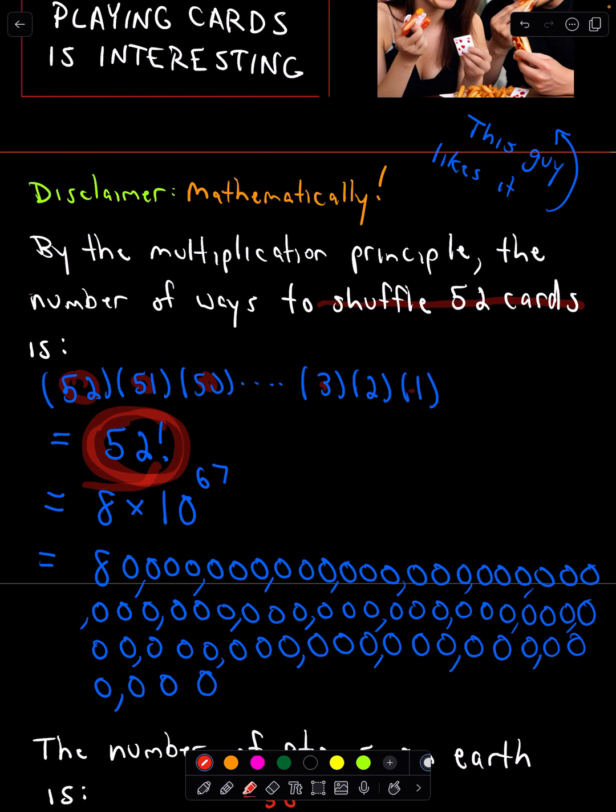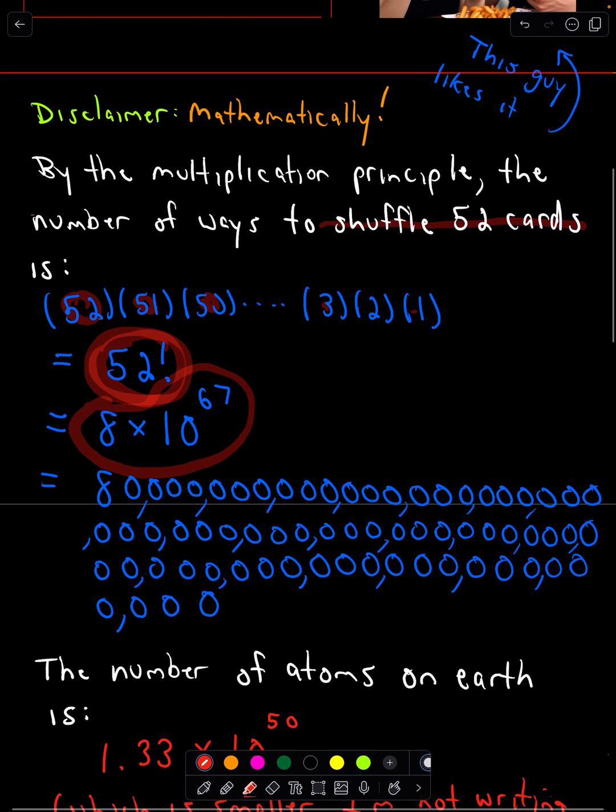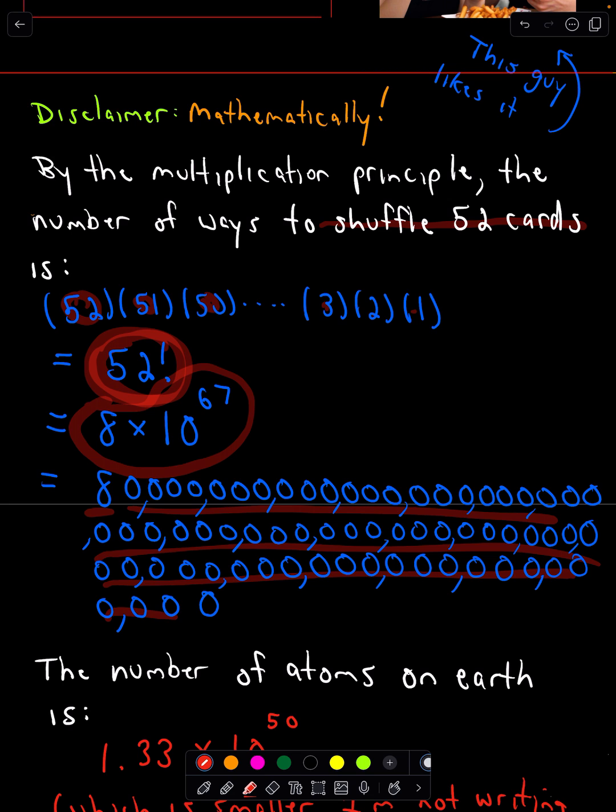But if you expand that out, that's actually 8 times 10 to the 67th power, which is an 8 with 67 zeros after it. So feel free to count all my zeros.